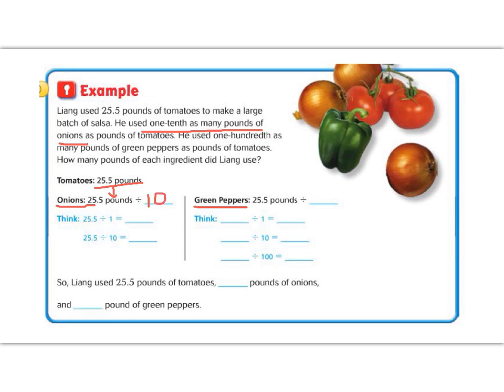So first, let's multiply 25.5 divided by 1. Well, we know anytime we divide by 1, nothing changes. So our answer is 25.5. Now when we divide by 10, our number is going to get smaller by 1 place value of 0. So it was right here in the decimal. Now we're going to move 1 to the left. So now we're going to have 2.55. 2.55 pounds of onions. So we can start filling in the blank. Lang used 25.5 pounds of tomatoes, 2.55 pounds of onions.